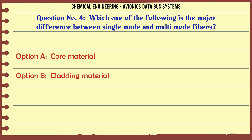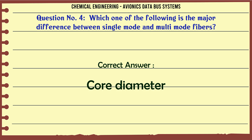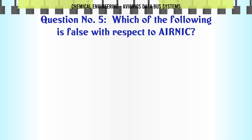Which one of the following is the major difference between single-mode and multi-mode fibers? A. Core material, B. Cladding material, C. Core diameter, D. Cladding diameter. The correct answer is Core diameter.